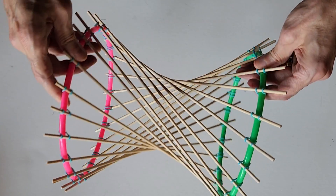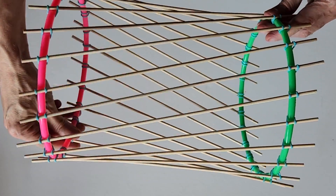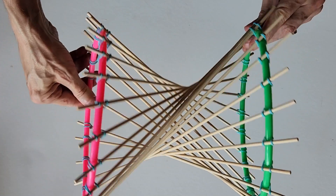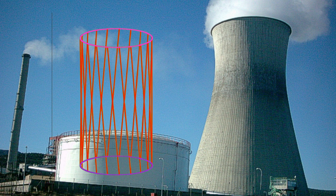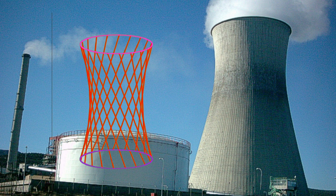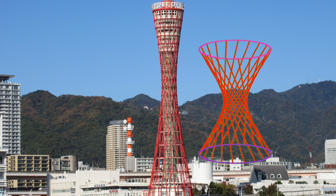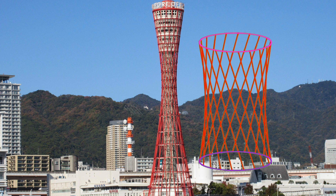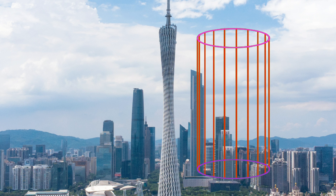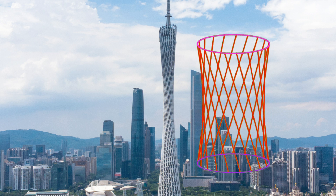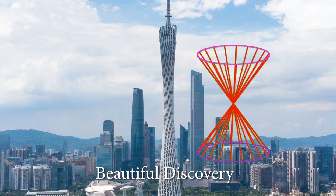And now we have both a physical stick model and a coding model of real architectural structures like cooling towers. Didn't you ever look at those cooling towers and wonder how they got that shape? You can actually get it with straight sticks — and that's what we learned by creating a model with code and with real sticks.